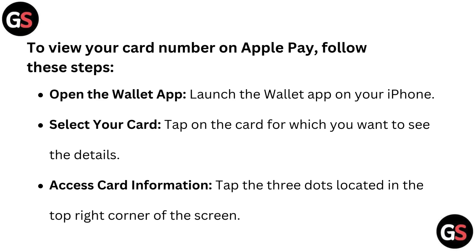Second, select your card. Tap on the card for which you want to see the details. Third, access card information. Tap the three dots located in the top right corner of the screen.